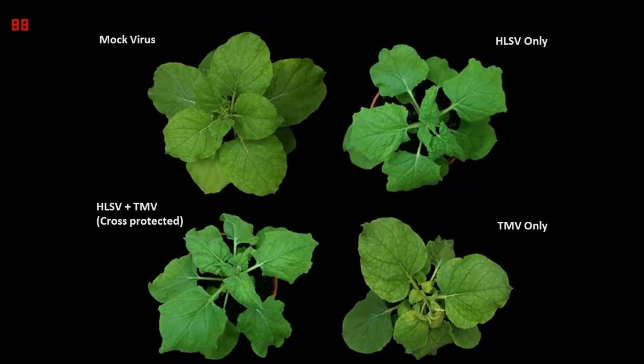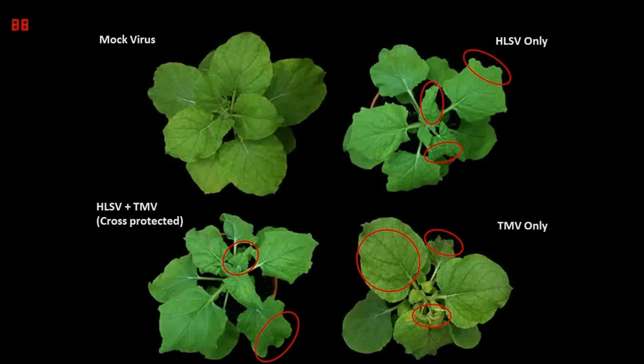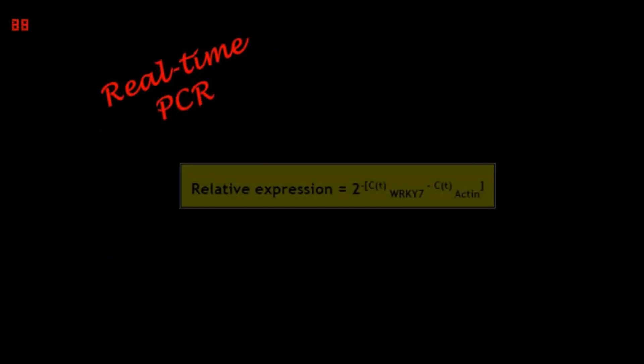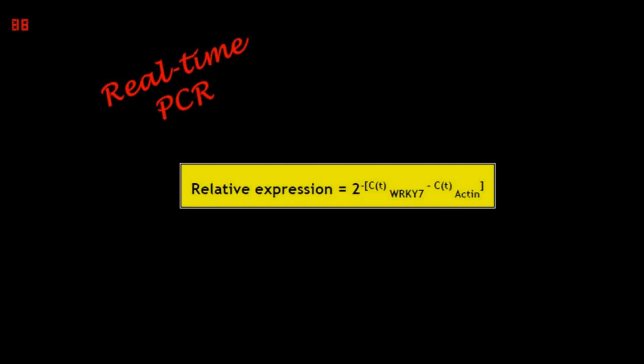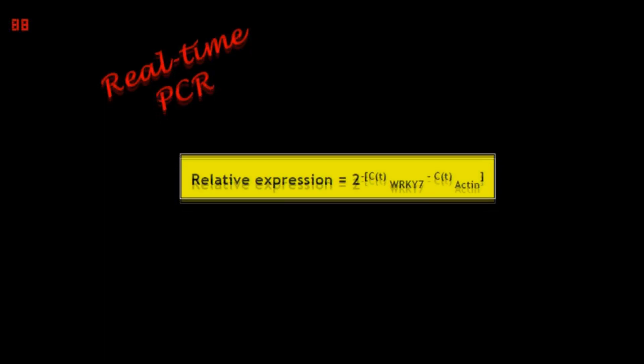This is our phenotypic results taken on 20 DPI. Mild virus symptoms such as the wrinkled and uneven leaf edges can be observed on the HRSV-infected and cross-protected plants. Severe necrosis and lesions were observed on the TMV-infected plant. Thus, the cross-protected plants clearly exhibited symptoms similar to the HRSV plants, instead of the TMV plants. From real-time PCR, we obtained CT values, and using this equation, we obtained the gene expression levels of the three genes relative to the constitutively expressed actin gene.